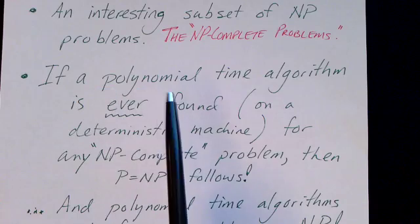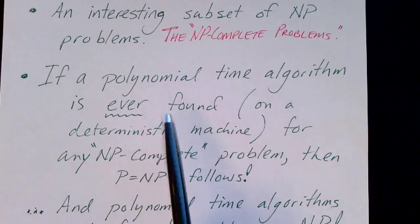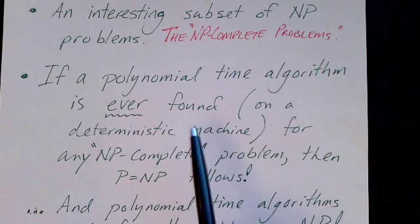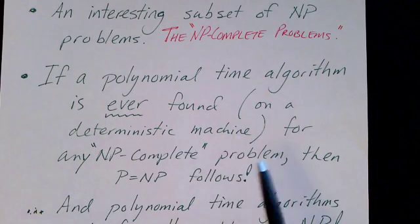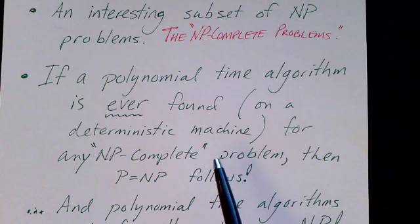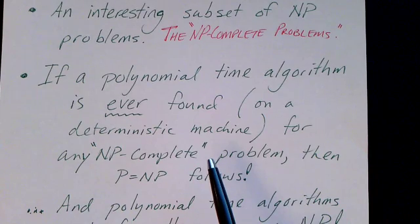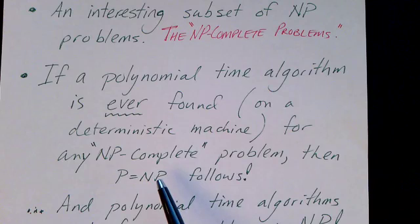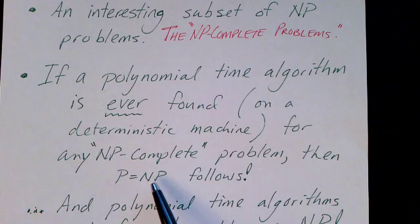If a polynomial time algorithm is ever found for a deterministic machine for any NP-Complete problem, then it solves the question of whether P equals NP in a way that nobody expects it to be solved.